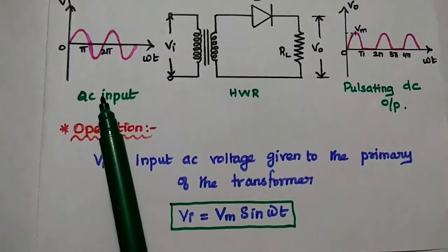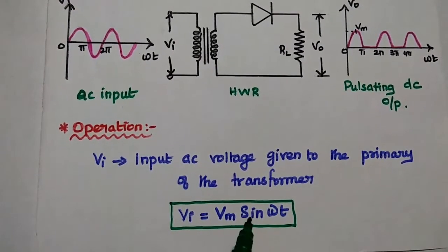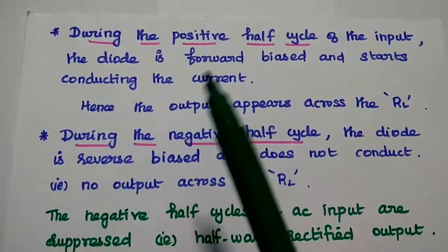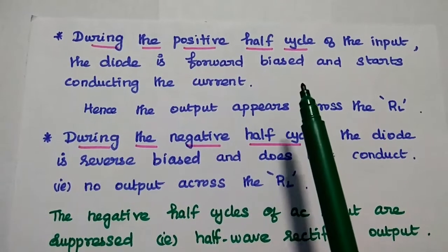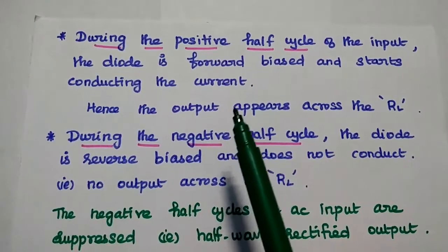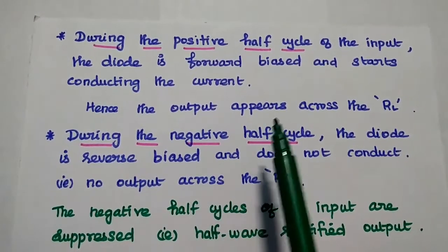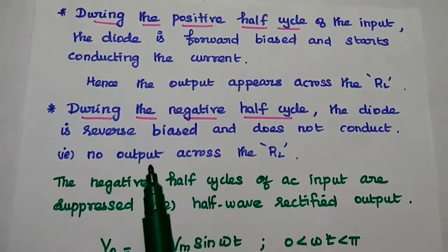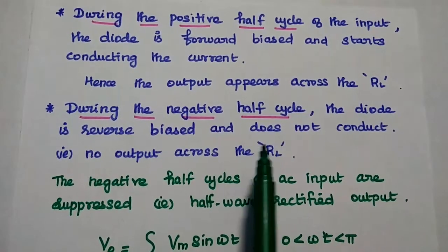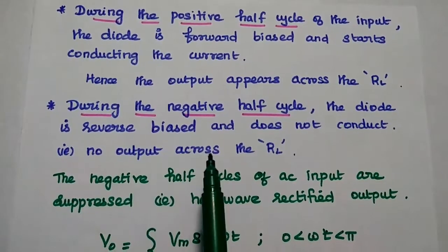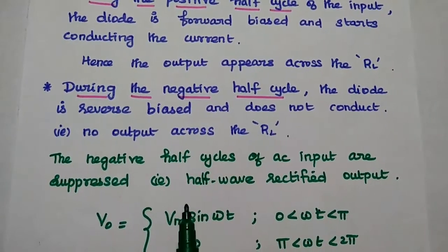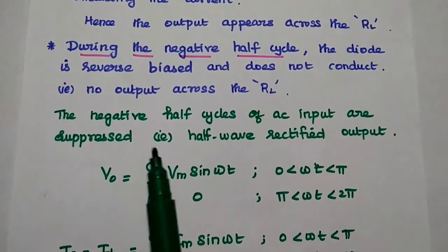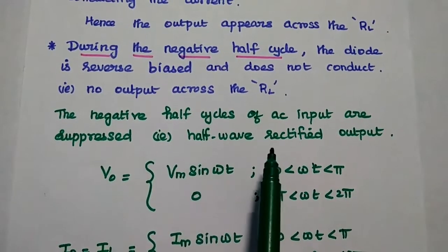The input signal is represented as Vm sin(ωt), where Vm is the maximum voltage of the signal. During the positive half-cycle, the diode is forward-biased and starts conducting current, so the output appears across the load resistor, which is similar to the input signal. During the negative half-cycle, the diode is reverse-biased and does not conduct, meaning there is no output across the load resistor. So in the half-wave rectifier, the negative half-cycles of the AC input signal are suppressed and we get the half-wave rectified output.